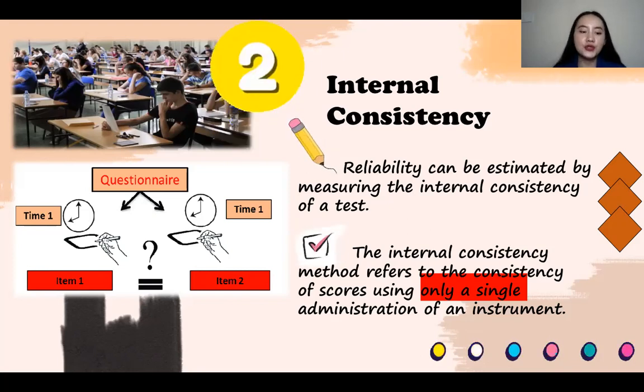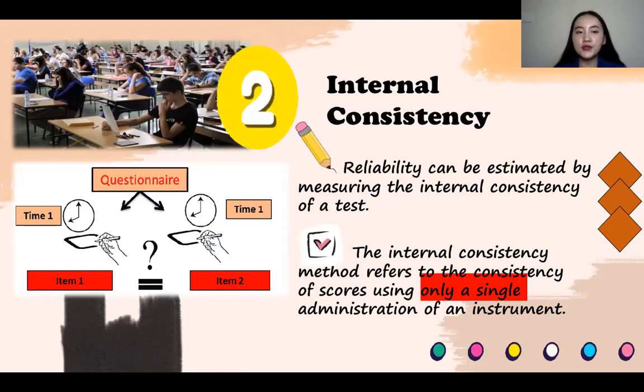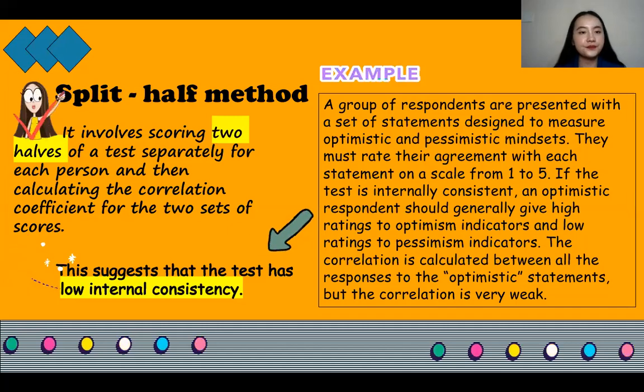So one way to measure the internal consistency is to use the split half method. Split half method involves scoring two halves of a test separately for each person. So for example, the split half is determined by dividing the total sets of items. So for example, one half may be composed of even numbered questions and the other half is composed of odd number questions, and then calculating the correlation coefficient for the two sets of scores.